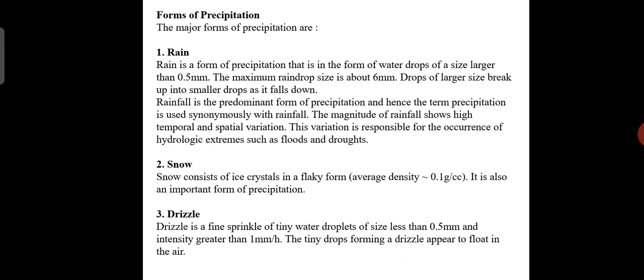First is rain. Rain is a form of precipitation that is in the form of water drops of a size larger than 0.5 mm. The maximum raindrop size is about 6 mm. Drops of larger size break up into smaller droplets as they fall down.